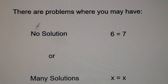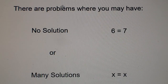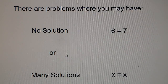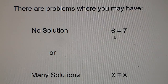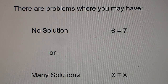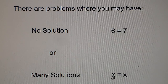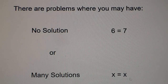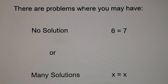Now there are some problems that might have no solution or many solutions. If we get an answer like 6 equals 7, we know that's not true, so we call that no solution — when two numbers that we know are not equal come out equal in the equation, we write no solution. If the same number or same set of terms is on both sides of the equal sign — meaning they match on both sides — that's considered many solutions, or all real numbers.